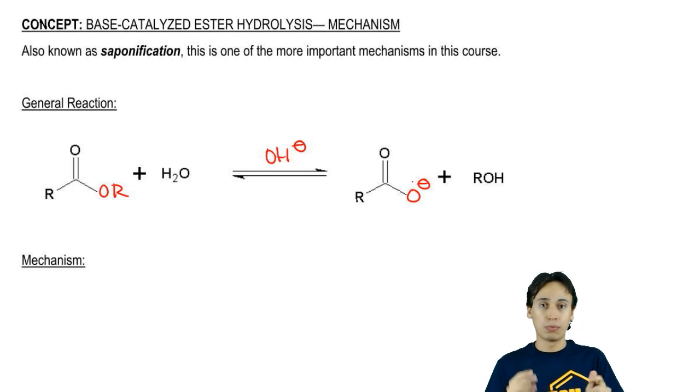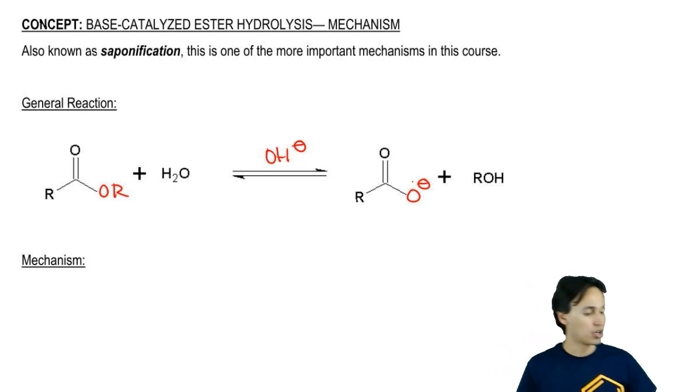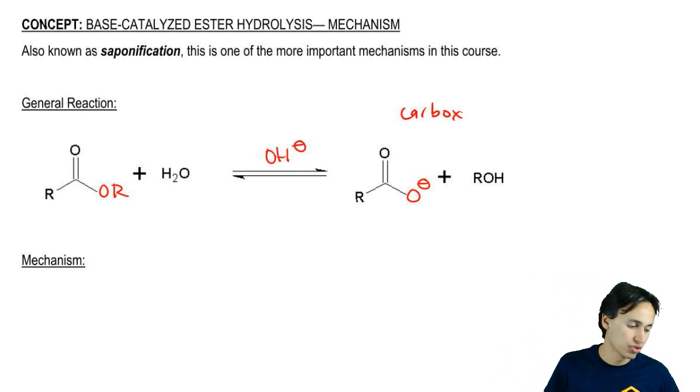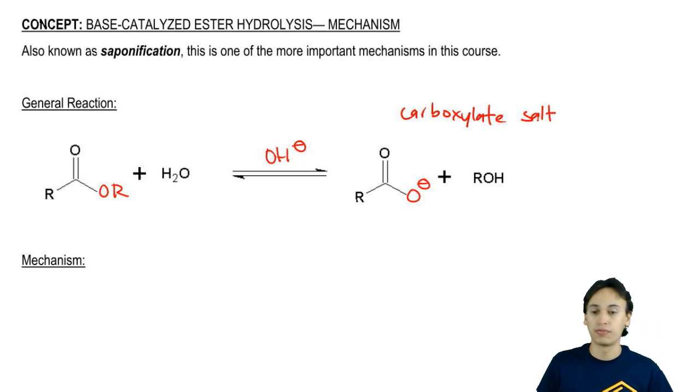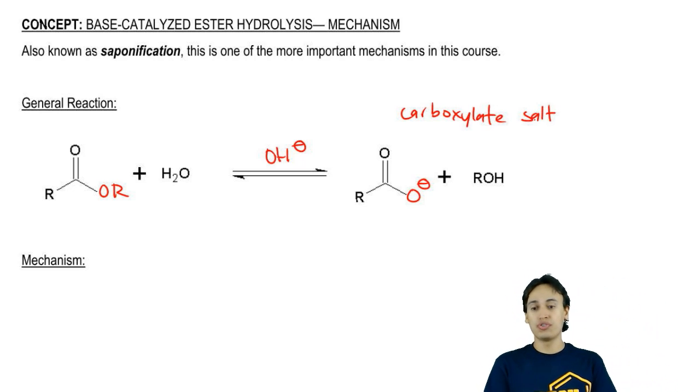...you actually should end up with a carboxylate or what's also called a carboxylate salt because it has that full negative charge. Just so you know, that is something that you should be aware of—that you need the protonation step to get to the carboxylic acid.